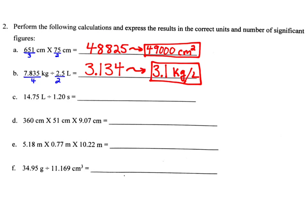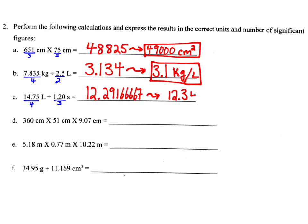Next, we have 14.75 liters divided by 1.20 seconds. 14.75 has four significant figures. 1.20 has three significant figures because the zero at the end is to the right of the decimal point, so it is significant. We do the math and our calculator gives us 12.29166667 — way too many digits. Based on the numbers we are given, we have to go to three significant figures, so that's 12.3. Our units are liters per second. That's our final answer.